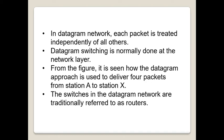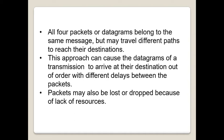That is why we use a different symbol for the switches in the figure. In this example, all four packets or datagrams belong to the same message, but may travel different paths to reach their destination. This is because the links may be involved in carrying packets from other sources and do not have the necessary bandwidth available to carry all the packets from A to X. This approach can cause the datagrams of a transmission to arrive at their destination out of order with different delays between the packets. Packets may also be lost or dropped because of lack of resources. In most protocols, it is the responsibility of the upper layer protocol to reorder the datagrams or ask for the lost datagrams before passing them on to the application.